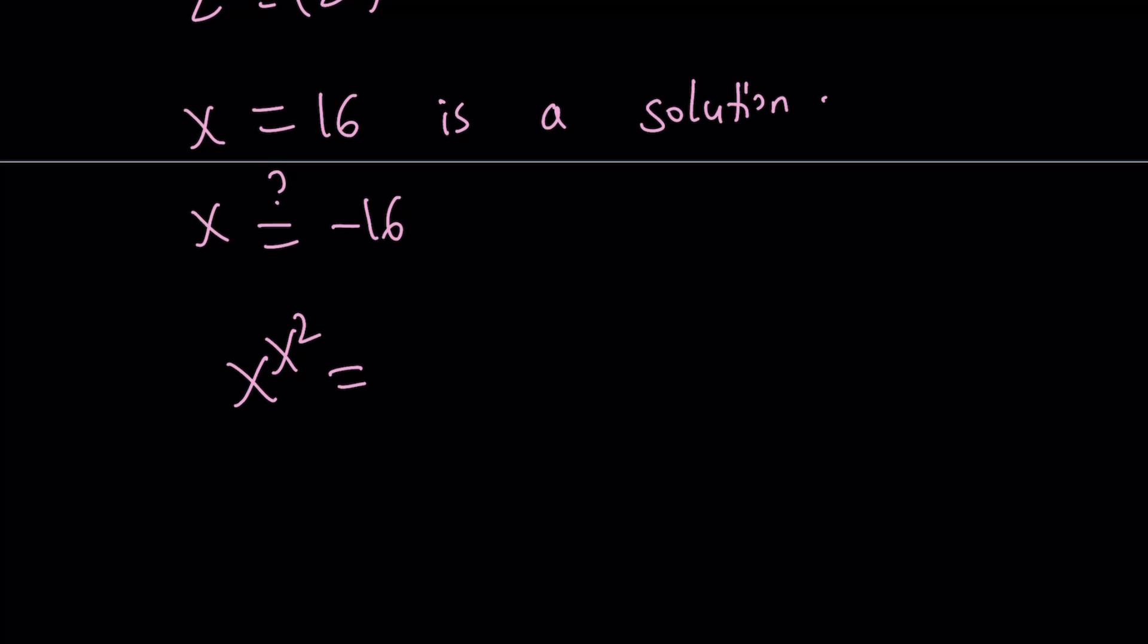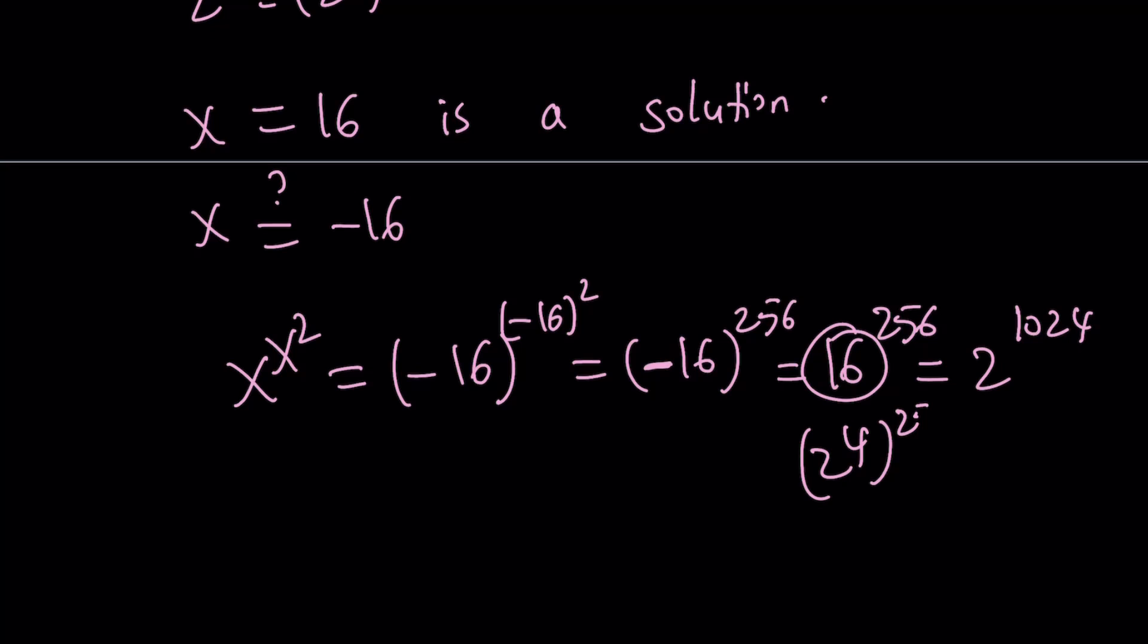So if x is equal to negative 16, we get negative 16 to the power negative 16 squared, which is 256. And now since we have a negative base and an even exponent, this is going to turn into a positive number. We can write this as 16 to the power 256. And that is 2 to the power 1024, because 16 is 2 to the 4th. And if you multiply 256 by 4, you're going to get 1024. So negative 16 also works. We have two solutions.